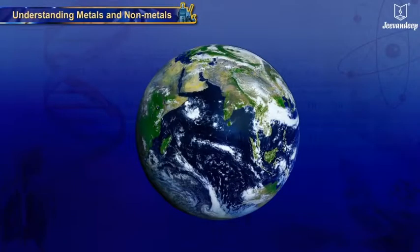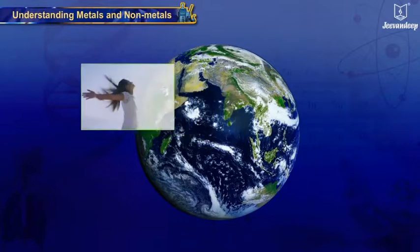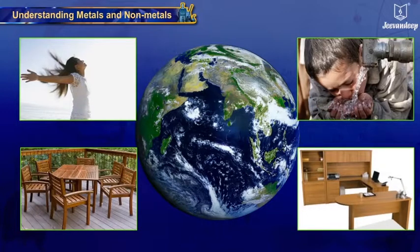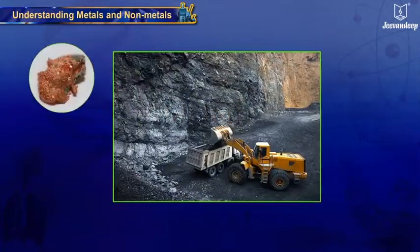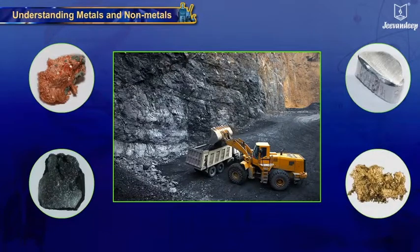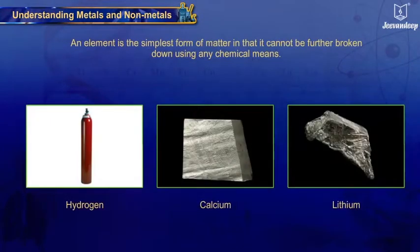The earth has the capacity to supply everything that man needs to survive. We breathe in air, drink water, use wood for furniture — the list of materials that we obtain from the earth is endless. The abundant materials that the earth provides us with are compounds of elements. An element is the simplest form of matter in that it cannot be further broken down using any chemical means.